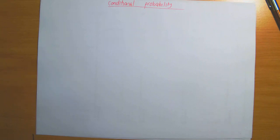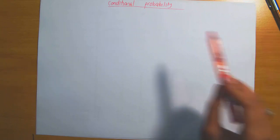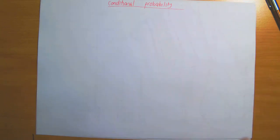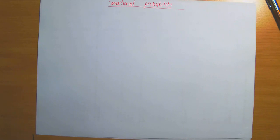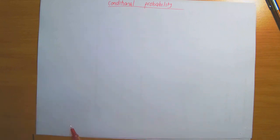In this video lecture, we're going to be discussing conditional probability. The probability of an event can be affected when there's additional information about the experiment that is known. If that is the case, this is when the concept of conditional probability comes into place.